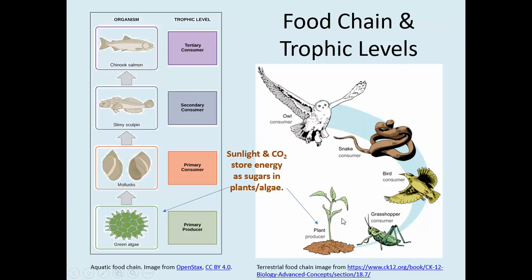The other image on this slide shows a terrestrial food chain — meaning it's on the ground, on soil systems. In this case, a plant fixes carbon dioxide and converts it into sugar using energy from the sun. That sugar energy gets transferred to grasshoppers, which are in turn consumed by birds. Snakes can eat the eggs of the birds, and owls can eat snakes and eggs from the birds. So this is a different type of food chain, but still traveling from primary producers up to primary consumers, secondary consumers, and tertiary consumers.